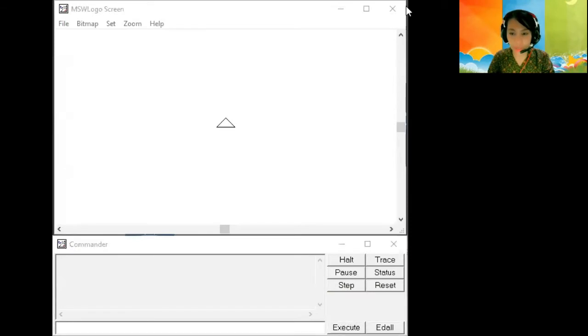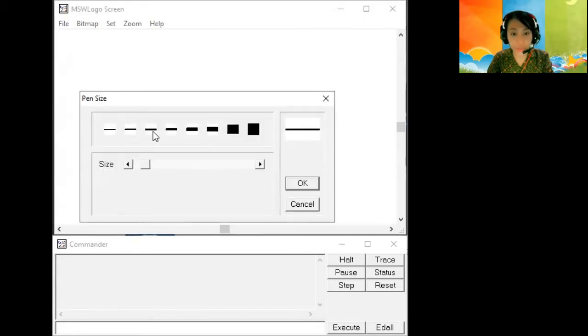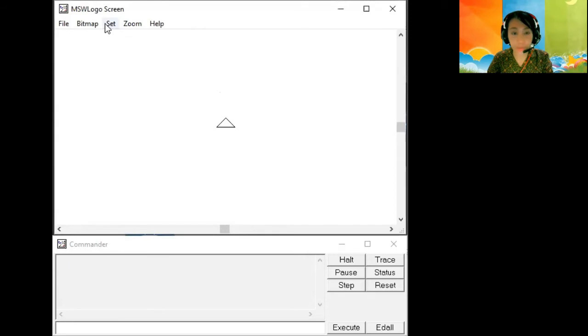Okay students, now we will try to use this LOGO program. We will try PU or pen down commands. First, if you want to change the pen size, you can click here in the menu bar. Click Set, and then choose pen size. You can choose the thickness that you want. Also you can give pen color.